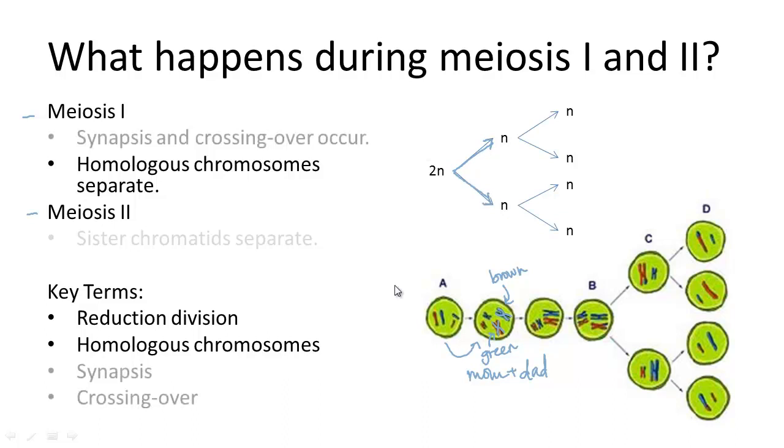Synapses and crossing over also occur in meiosis I, which is the process of exchanging genetic information between two chromosomes in a homologous pair. These two processes are discussed in more detail later. Once the exchange is complete, the homologous chromosomes separate by lining up randomly at the center of the cell and moving to opposite sides, and the resulting haploid cells are made genetically unique.